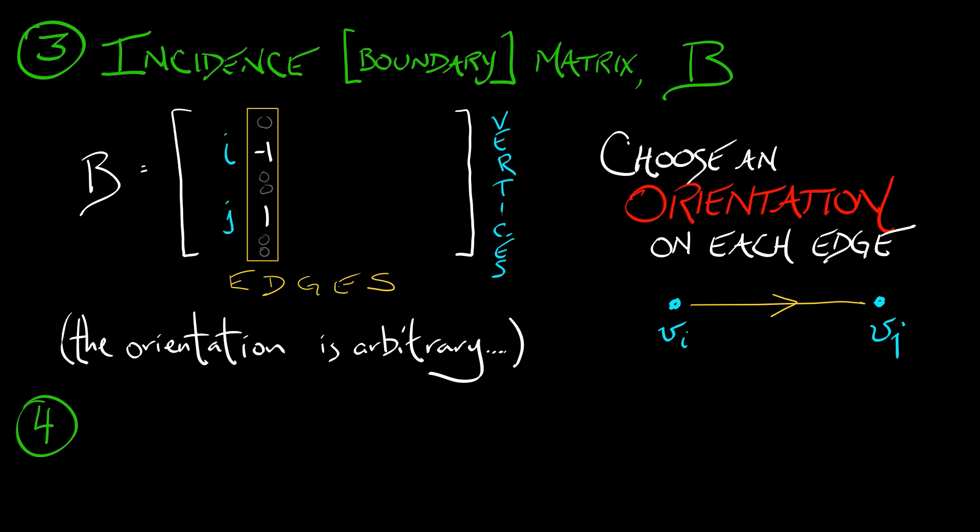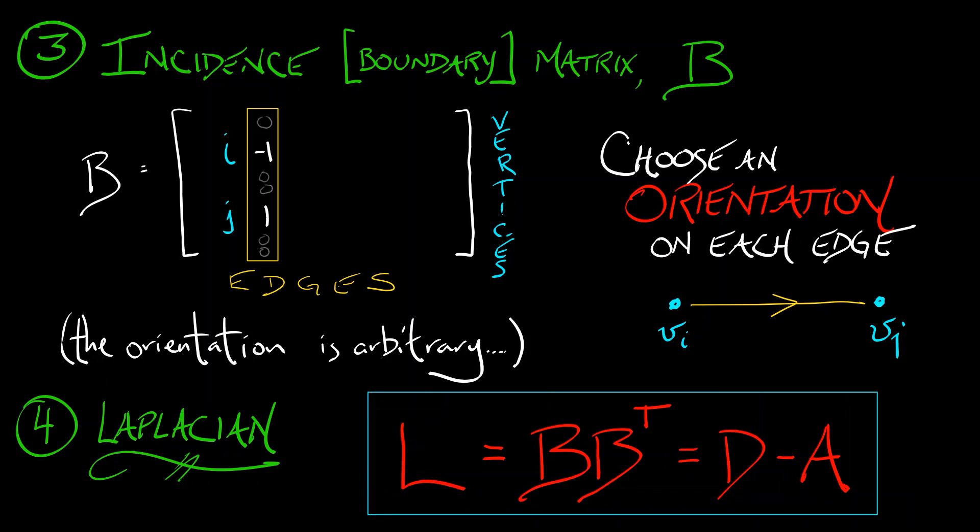The most important one for our purposes is the Laplacian. The Laplacian L can be defined, this is kind of a definition and a theorem all rolled together, can be defined as BB transpose or as D minus A, using all of these matrices that we've talked about so far.